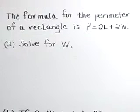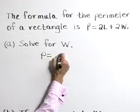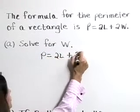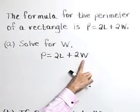In part A, we want to solve this formula for W. So rewriting our equation, P is equal to 2L plus 2W, we want to isolate W and get that on one side by itself.